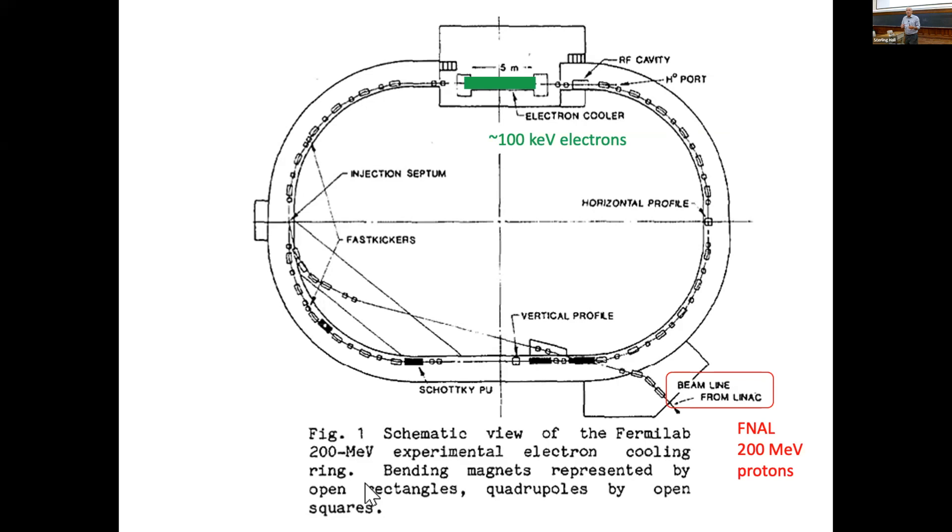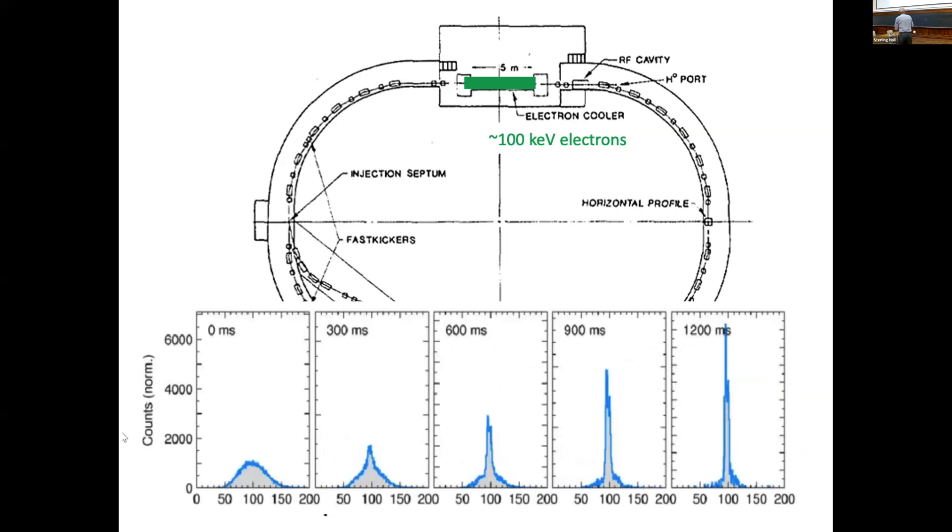This is a dramatic effect. That's a sequence of beam profile measurements over one second. So if you turn on the electron cooling, the beam collapses within a second, and the one or a few seconds lifetime of the stored beam becomes over an hour.